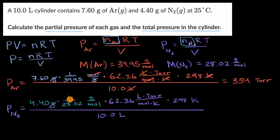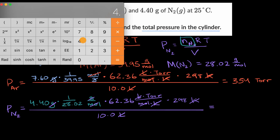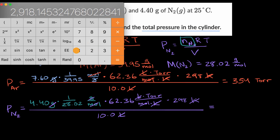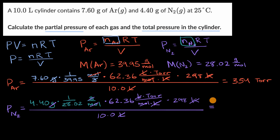Once again, the units work out: grams cancel with grams, moles cancel with moles, liters cancel with liters, kelvin with kelvin — leaving just torr. Computing 4.40 divided by 28.02, times 62.36, times 298, divided by 10.0, and rounding to three significant figures gives 292 torr. So the partial pressure of molecular nitrogen is 292 torr.